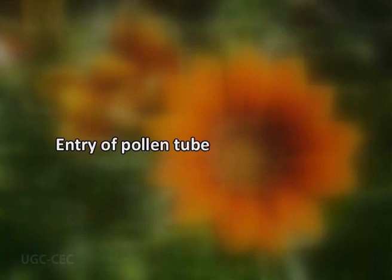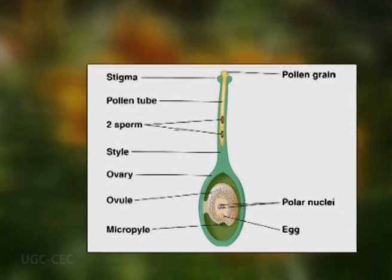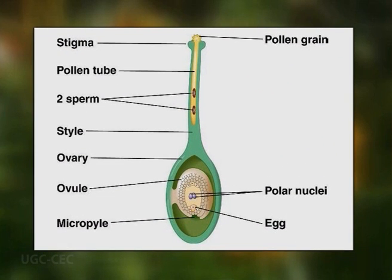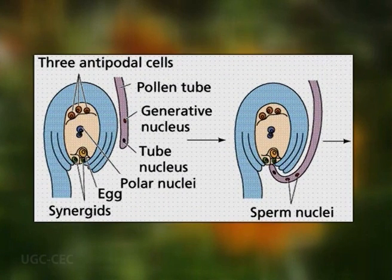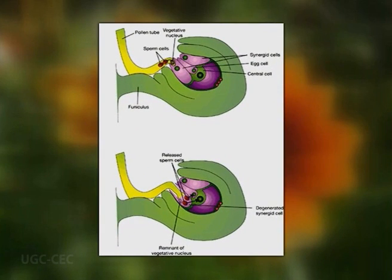Now we will discuss the entry of the pollen tube into the embryo sac. Whatever the mode of entry of the pollen tube into the ovule, the pollen tube always enters the embryo sac through the micropyle and enters into the filiform apparatus through its apex, growing through it into the synergid. The synergid which receives the pollen tube appears to be predetermined, as it starts degenerating well before the arrival of the pollen tube.